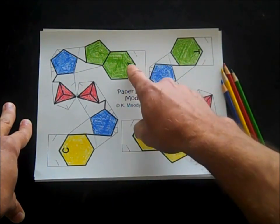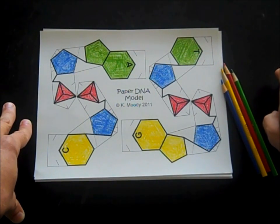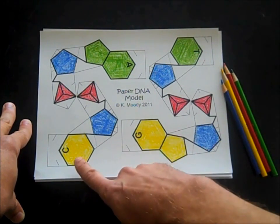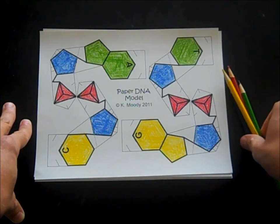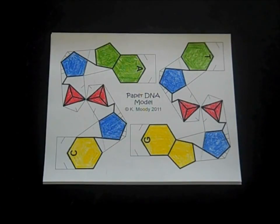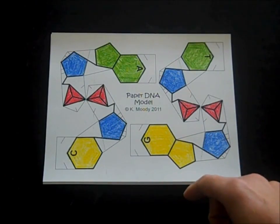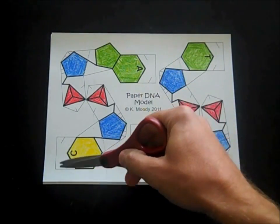Now I've colored adenine and thymine here green, to represent their complementary nature because they're always found together, and cytosine and guanine yellow for the same reason. And really, you could use any colors you wanted, but I find that these primary colors work pretty well. Now, once the nucleotides are all colored, then we need to cut them out by just simply following the lines around each one.